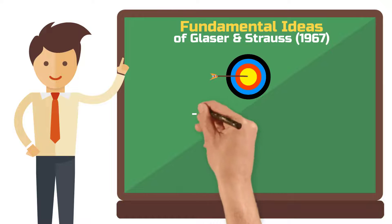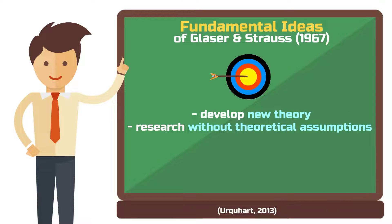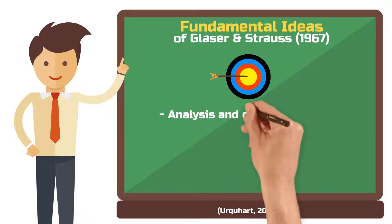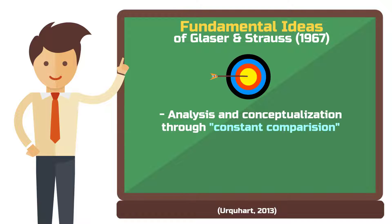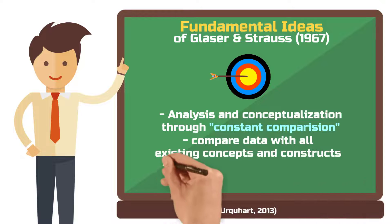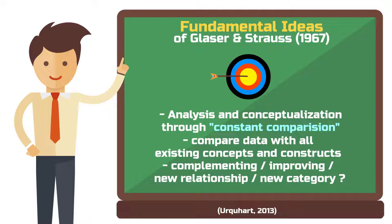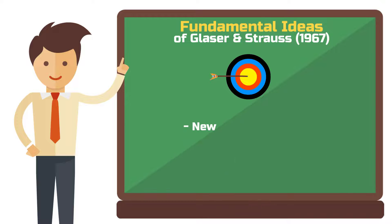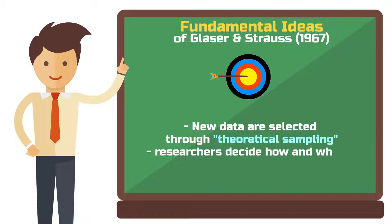The goal of grounded theory is to develop new theory. Researchers should not make any theoretical assumptions when starting their research. Analysis and conceptualization happen through the process of constant comparison. What this basically means is that whenever you come up with a new code or category from your data, you compare it to the constructs and concepts you already developed before and decide whether it enriches the existing codes or categories or if you are better off developing a new one. New data are selected through the process of theoretical sampling, where researchers decide how and where the text sample will be drawn for analytical reasons.